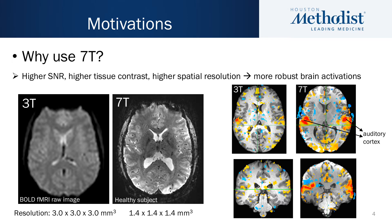What is the benefit of using 7T MRI? Compared to the conventional 1.5T and 3T, 7T MRI offers higher signal-to-noise ratio, higher spatial resolution, higher tissue contrast, and more. Therefore, 7T functional MRI can provide more robust brain activation results.